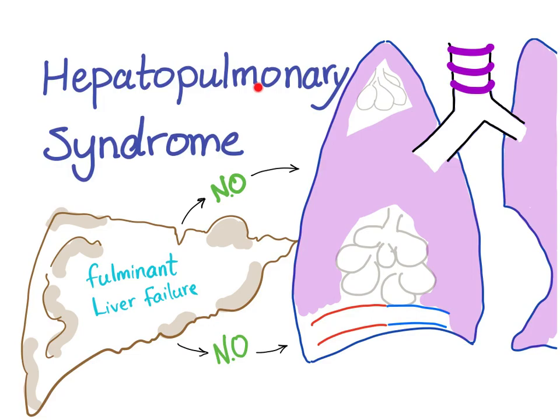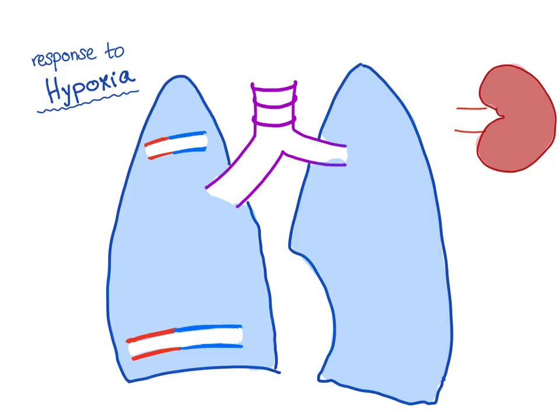Hepatopulmonary — a problem in the liver will lead to a problem in the pulmonary, i.e. lungs. Liver problem leading to lung problem through nitric oxide. Any tissue except the lung responds to hypoxia by vasodilatation, i.e. increasing the lumen of the blood vessel. And this makes sense.